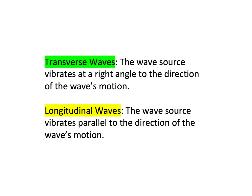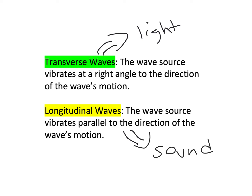Different things behave like different kinds of waves. You can tie a rope to a wall and shake it up and down to create a transverse wave, but the most famous kind of transverse wave is simply light. Light is an example of a transverse wave, so if we want to understand how light behaves, we need to understand how transverse waves behave. A famous example of a longitudinal wave is a sound wave — sound is an example of a longitudinal wave.